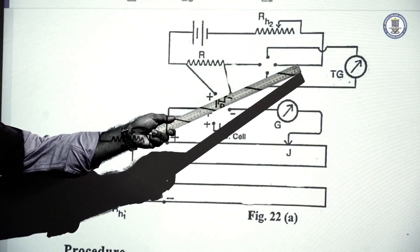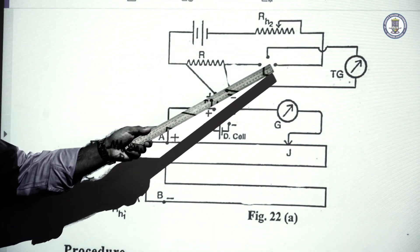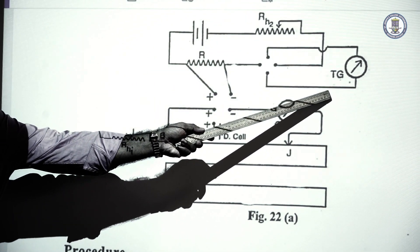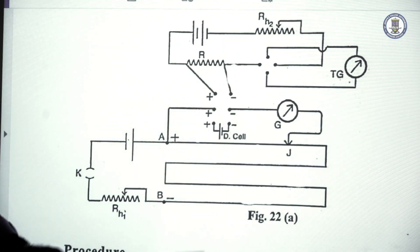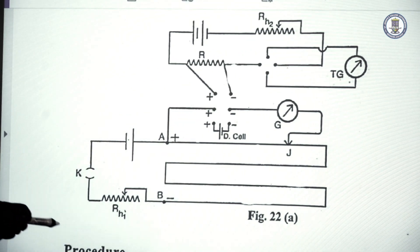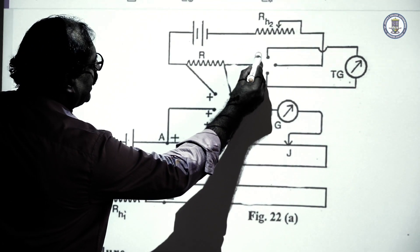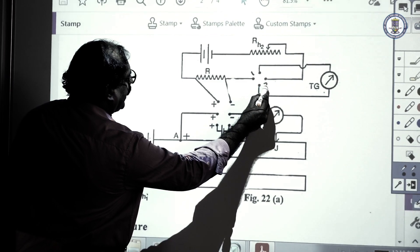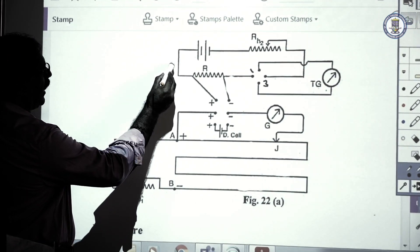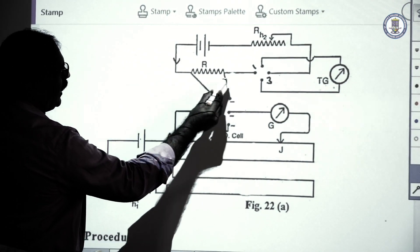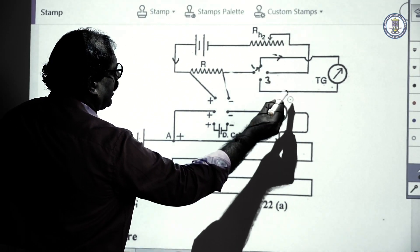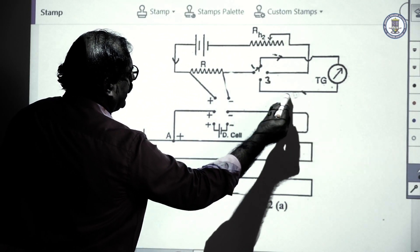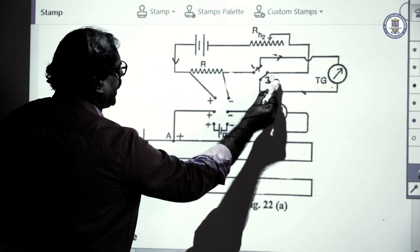A rheostat is there so we can send any current through R. The tangent galvanometer is connected with the help of a commutator to reverse the direction of current. When the opposite keys 1 and 3 of the commutator are connected, the current flows in one direction through the TG and the circuit is completed.